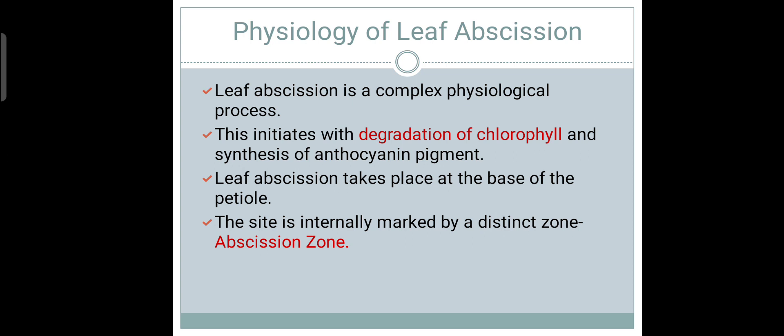As you know, chlorophyll is the green pigment present in the leaves. When the Leaf Obsession process initiates, this is the first step which occurs. Leaf Obsession takes place at a particular site at the base of the petiole. This site is internally marked by a distinct zone known as the Obsession Zone. As the name suggests, this is the site where the Leaf Obsession process will occur.